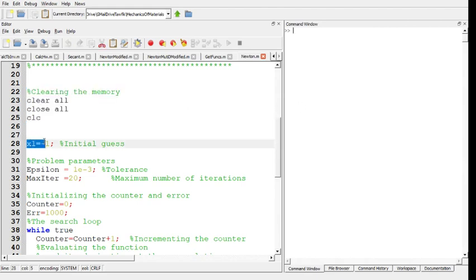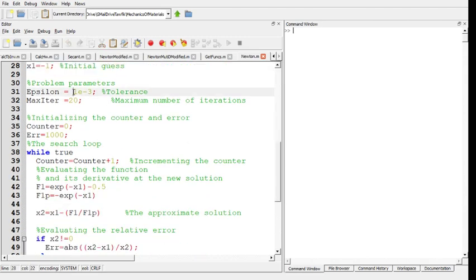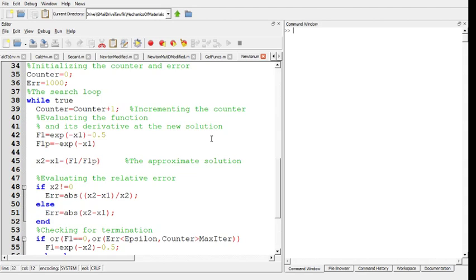Then my initial guess is minus one, and the tolerance I'm having is one over 1000. And the number of iterations is 20, initializing the counter and initializing the error in order to avoid any problems.